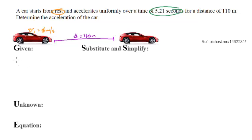Since this is happening in the x-axis, I'll make this in red, my velocity initial x is 0 meters per second. The displacement in the x is 110 meters. And since time doesn't have a direction, I'll write it in black, time 5.21 seconds.